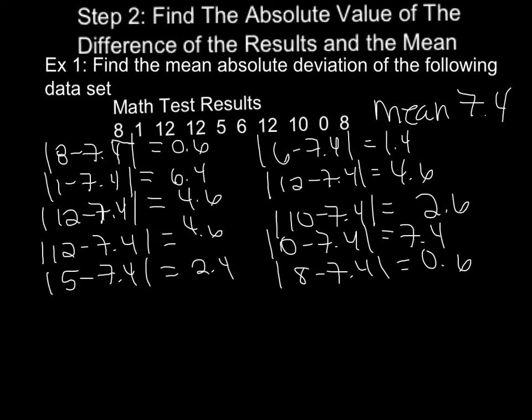So we're looking to see the distance away from 7.4 that each of our value sets are on a number line. So you're just going to take each one of your numbers in your data set and subtract 7.4. If you end up with a negative number, you just take the absolute value, which is positive.